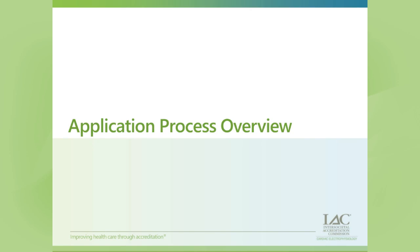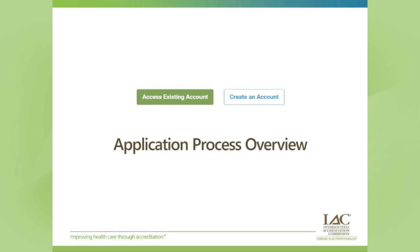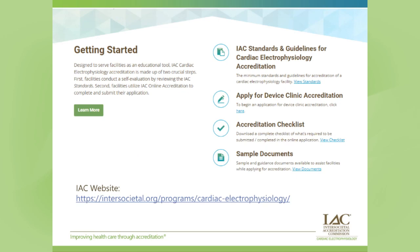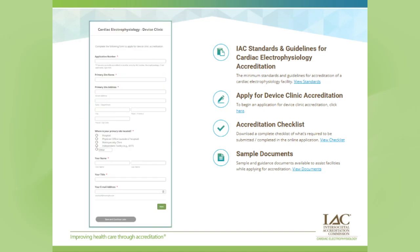For the application process, we have a really nice new tool to streamline things. You can formally open an application and add device clinic to your existing accreditation. We also have a nice quick link on our website — go to intersocietal.org, select cardiac electrophysiology, then the getting started page, and in the right-hand column you'll see 'Apply for Device Clinic.' Just click that link and it pops up a quick form to get started very easily. All of this is free — we don't ask for any money until it's time to submit your application or before you receive your decision.